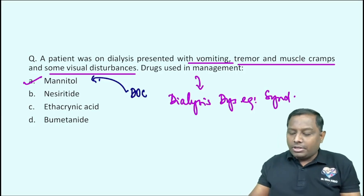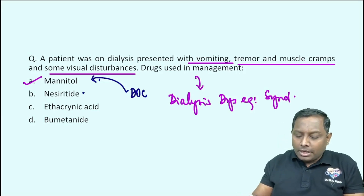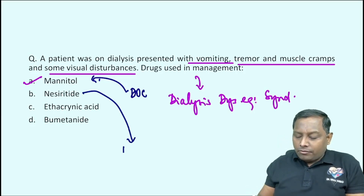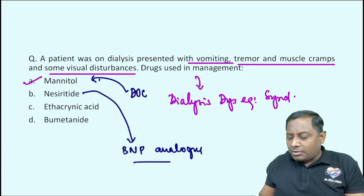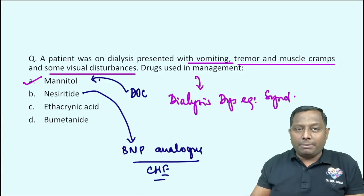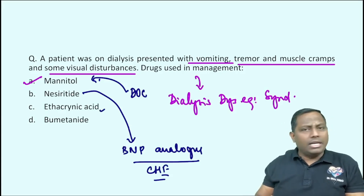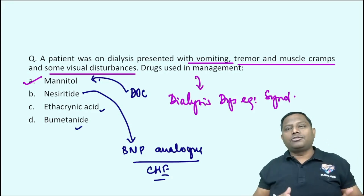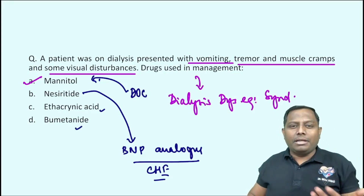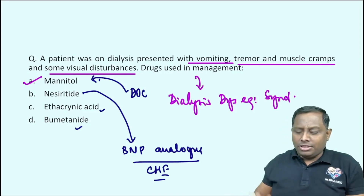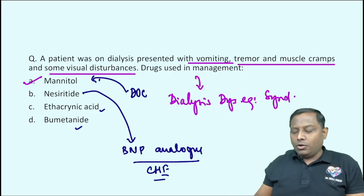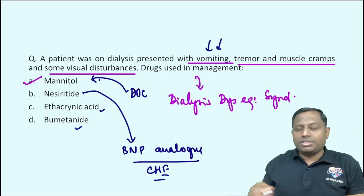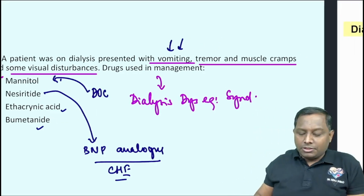Other options like ethacrynic acid and bumetanide are diuretics not commonly utilized for dialysis disequilibrium syndrome. Nesiritide is a BNP analog mainly used in congestive heart failure. Ethacrynic acid is highly ototoxic, and bumetanide is associated with hyponatremia, hypokalemia, and other side effects. They are also slow-acting compared to what is needed here. So the first question answer is mannitol.